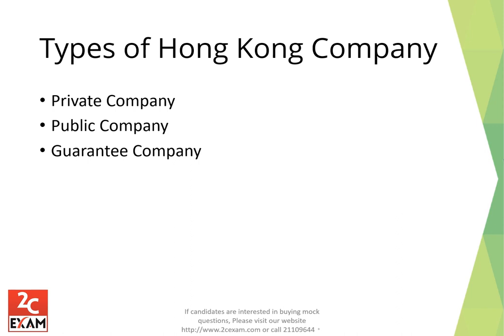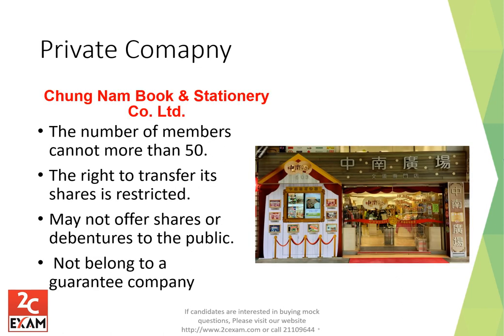Types of Hong Kong company: there are three — private company, public company, and guaranteed company. A private company cannot have more than 50 members, has restrictions on share transfers, cannot offer shares or debentures to the public, and cannot be a guaranteed company. Examples include a stationery shop or a restaurant.